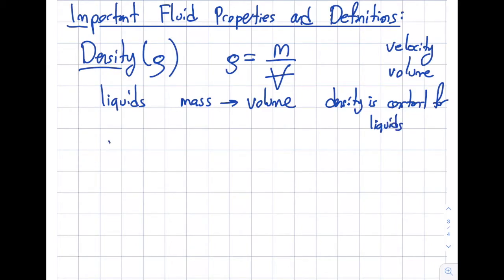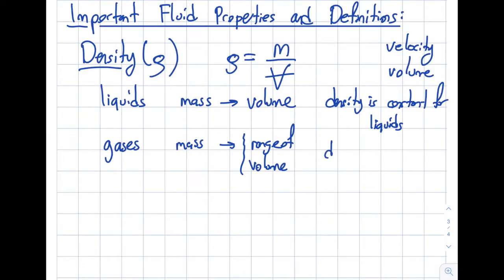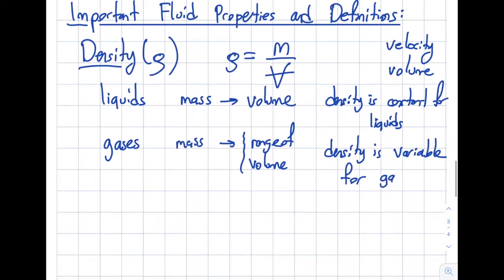So this means that density is constant for liquids. However, for the gases, then what happens is if I have a mass, there's not just a volume. I can have very different range of volumes that I can occupy depending on my pressure, depending on my temperature. And density is variable for gases. So this is an important one that I would like you to know.